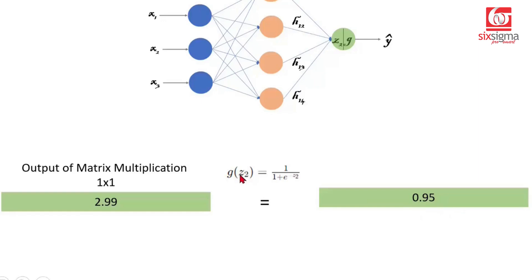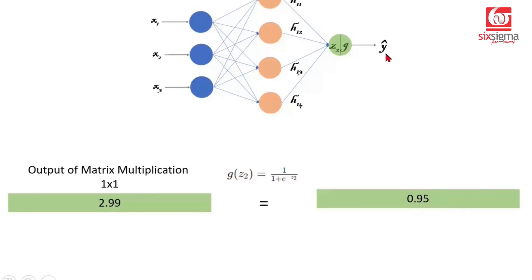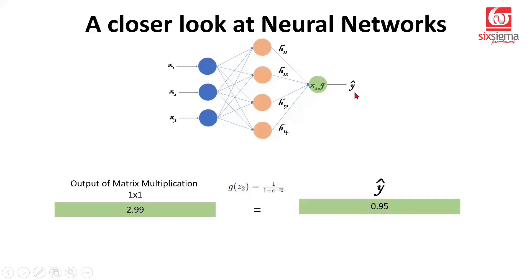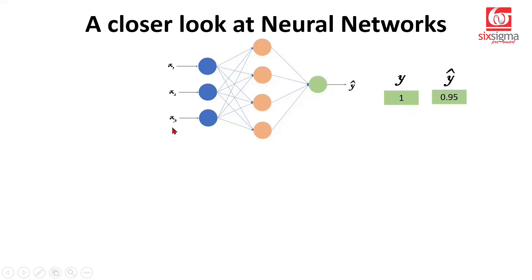What is this value? So this GZ2 or the value that we've computed here is nothing but y hat or your prediction. So at this stage, we have the y hat. We already know why. So we've completed the forward pass, which means we started with some inputs and we went through the network from left to right. We have generated a prediction, which is 0.95.